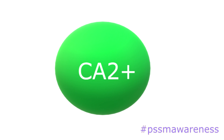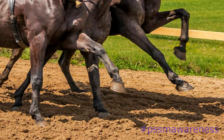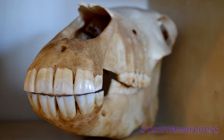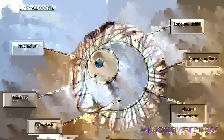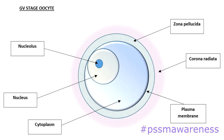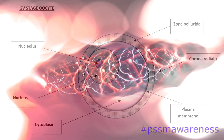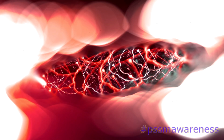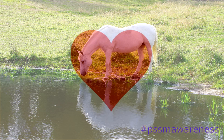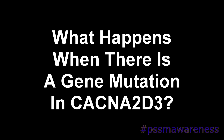Calcium ions contribute to the way in which bodily parts function and biochemical processes within muscle cells. Some of the many functions calcium ions contribute to in a horse's body are: muscle contraction, blood clotting, bone and teeth strength, nerve impulses, oocyte production — starting egg production in mares — transmission of electrical impulses in the body, regulating heartbeat, and fluid balance.